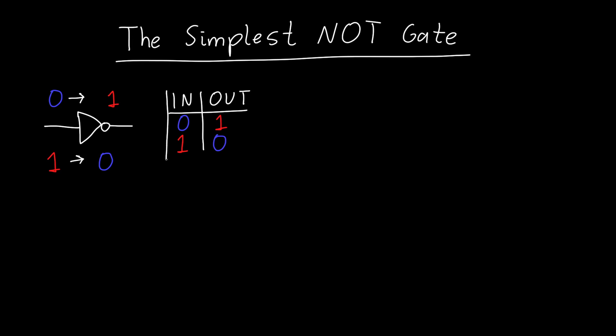And so this is what's called a truth table, and it just maps our input to some output. Now the NOT gate only has one input. It's sort of the simplest possible gate in that regard. So how do we actually make a NOT gate?